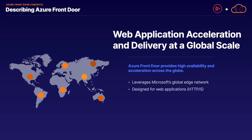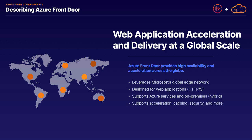Another key feature of Azure Front Door is that it supports not just Azure services, but also services on-premises. So we can use Azure Front Door for global layer seven load balancing in a hybrid network solution. It also supports acceleration, caching, and security at the edge locations.